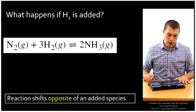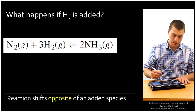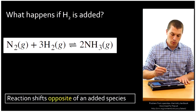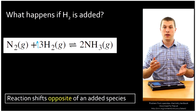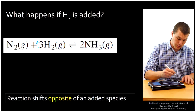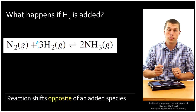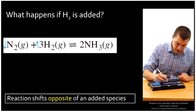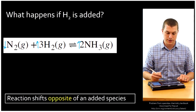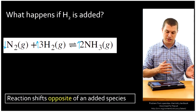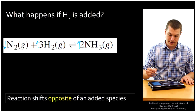What happens if hydrogen is added? If I add hydrogen, I'm going to increase hydrogen concentration. Some of that's going to react with nitrogen and combine to go forward to form more products. So my nitrogen concentration will drop and my ammonia concentration will increase. That's what happens when the reaction shifts to the opposite side of an added species.